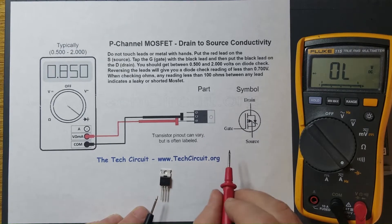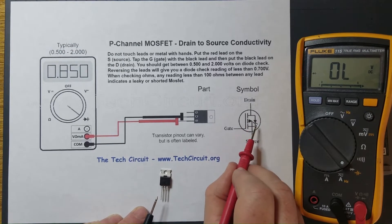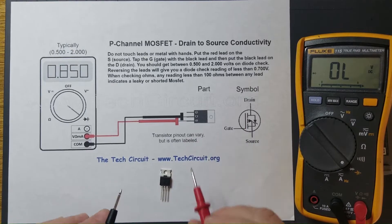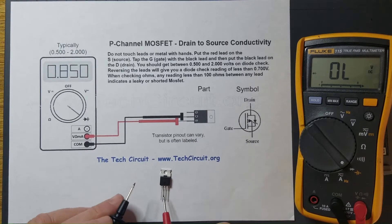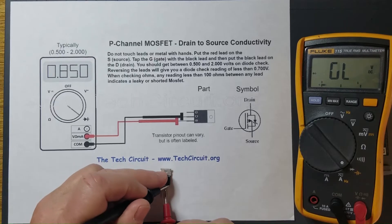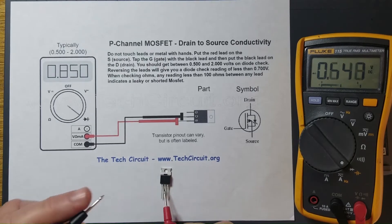Now this particular one has a flyback diode from drain to source. So if you were to check from drain to source, you should expect some conductivity — which you do — and that's the conductivity of the forward bias of that diode.